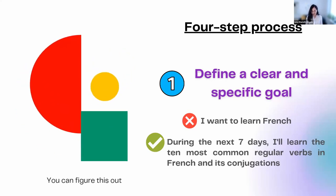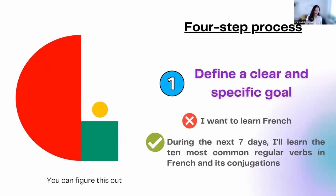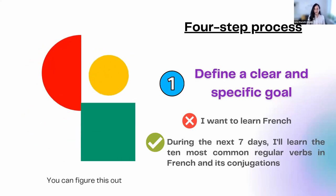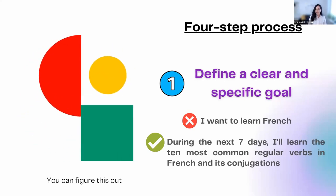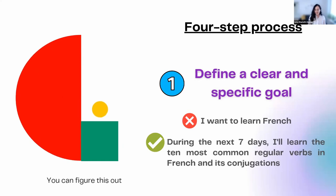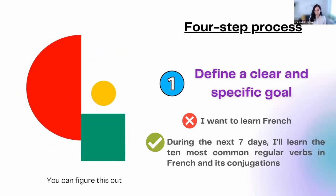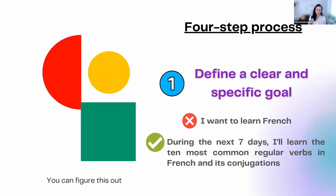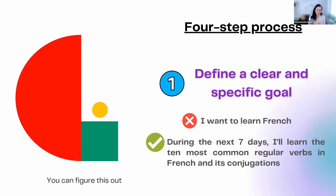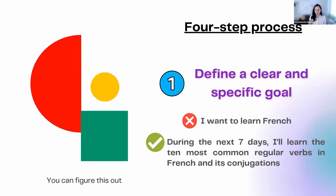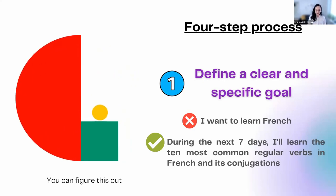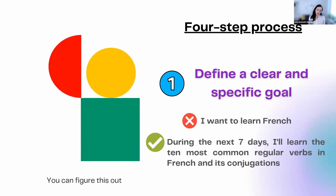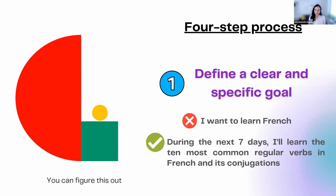Instead, try something like: 'During the next seven days, I will learn the seven most common regular verbs in French and their conjugations.' In that way, after just one week, you know you will be seven verbs closer to your primary goal. At the same time, you will have a clear idea of what you will learn during those seven days.